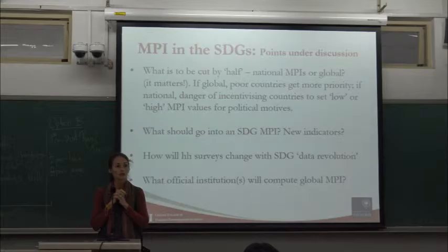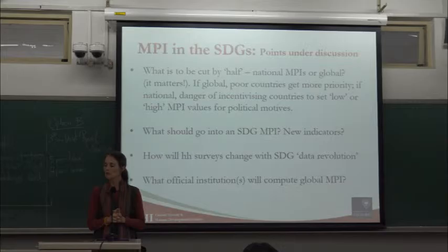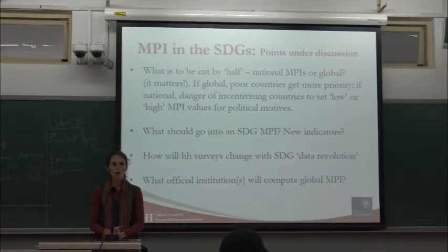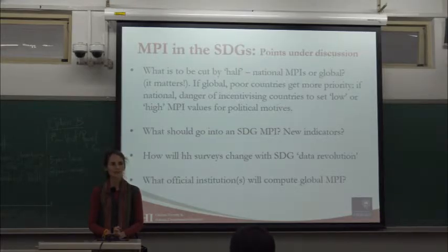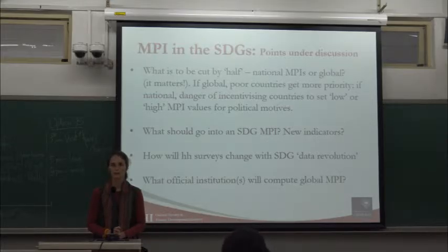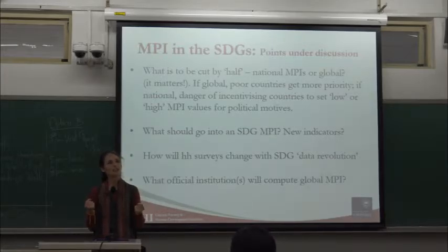I'll conclude by pointing out some standing questions. The first and most important is: what is to be cut by half? For example, according to Mexico's national poverty measure, about 46% of people are poor. According to the global MPI for Mexico, about 2.8% of people are poor. So the question is: which of these two numbers should be cut by half?